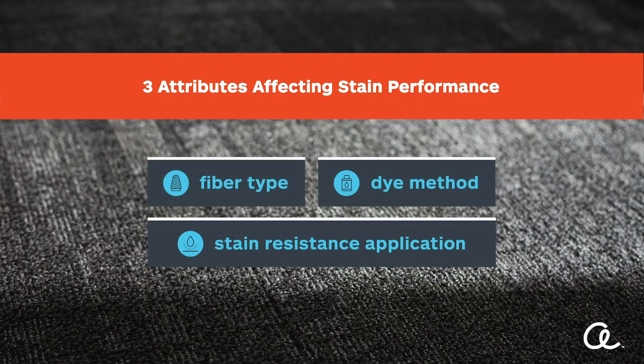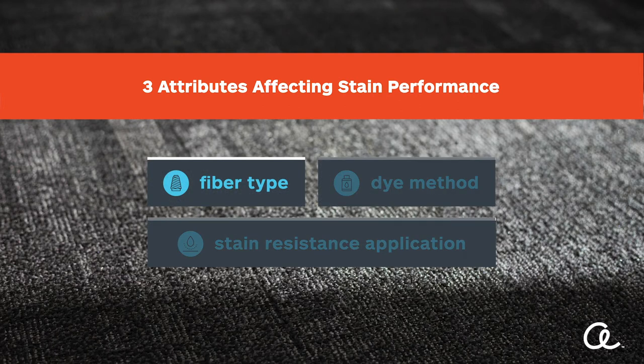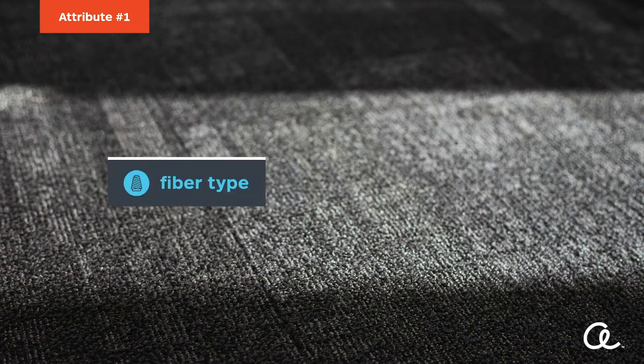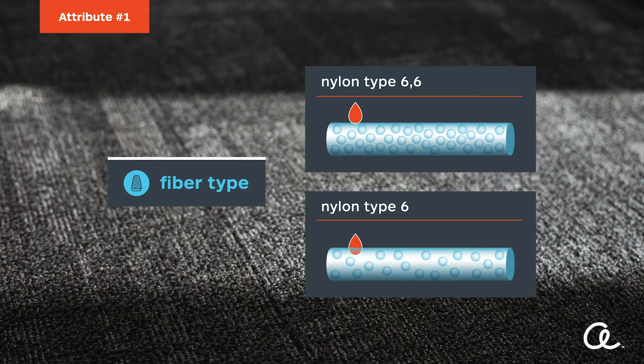Three key factors impact stain resistance. The first is carpet fiber type — chains of molecules that make up fiber, often referred to as a polymer. The two primary carpet fiber types in commercial spaces are nylon 6 and nylon 6-6. A nylon type 6-6 polymer has a tighter molecular structure and lower permeability to staining substances, providing exceptional resistance to crushing and matting, heat and friction, and stain penetration.